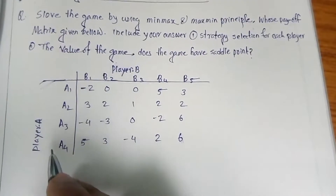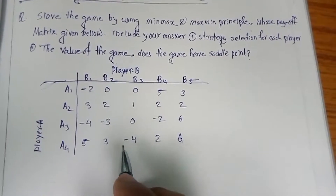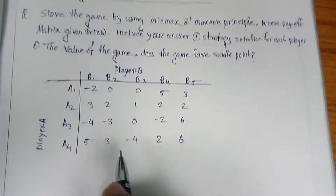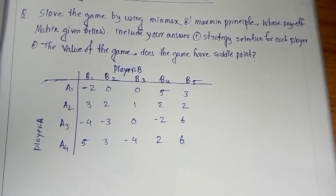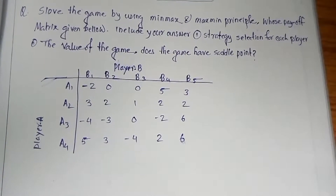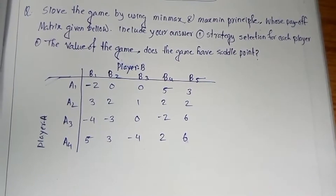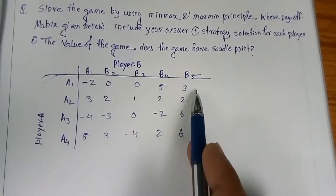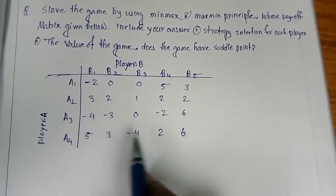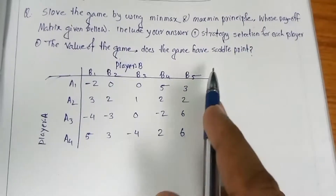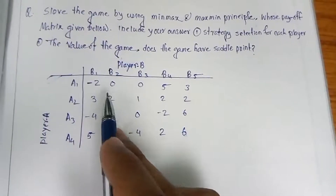There is a payoff matrix for Player B and Player A. I will solve this step-wise — feel free to ask me questions in the comment box. The first condition of game theory is to find the minimum in each row. The row minimum for row 1 is -2, row 2 is 1, row 3 is -4, and row 4 is -5. These are called the row minima, and we add an extra column to record them.